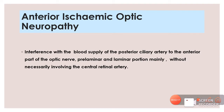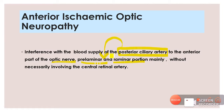Anterior Ischemic Optic Neuropathy occurs because of interference with the blood supply of the posterior ciliary arteries to the anterior part of the optic nerve — mainly the pre-laminar and laminar portions. The posterior ciliary arteries supply these regions and also form the Haller and Zinn circle around the optic nerve head. Any compromise of blood supply from these posterior ciliary arteries to this region will lead to AION.